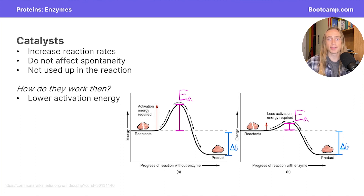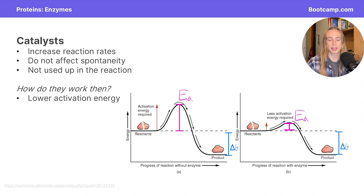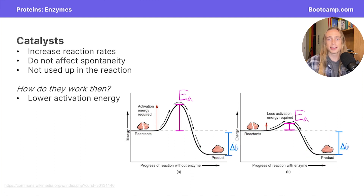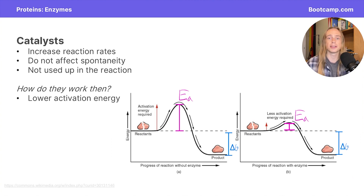In addressing the spontaneity of this reaction, notice that in both the catalyzed and uncatalyzed versions, the reactants and the products have the same amounts of energy. The difference in energy between the products and the reactants gives us a value known as delta G, which determines spontaneity. Because a catalyst doesn't change the energy of the reactants and the products, the uncatalyzed and catalyzed versions have the same delta G value, meaning that they have the same spontaneity.